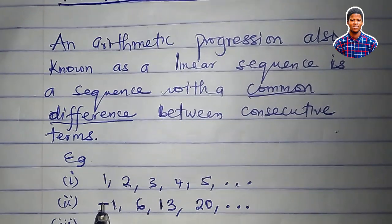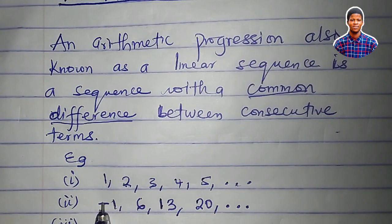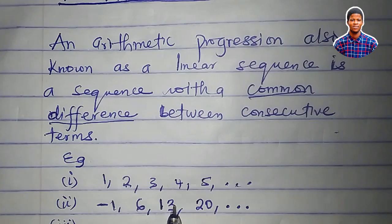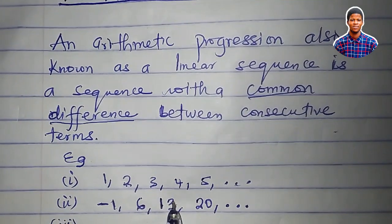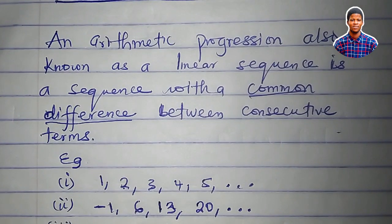Another example: negative one, six, thirteen, twenty. Six minus negative one, that's six plus one, seven. Thirteen minus six, seven. Twenty minus thirteen, seven. The common difference is seven.